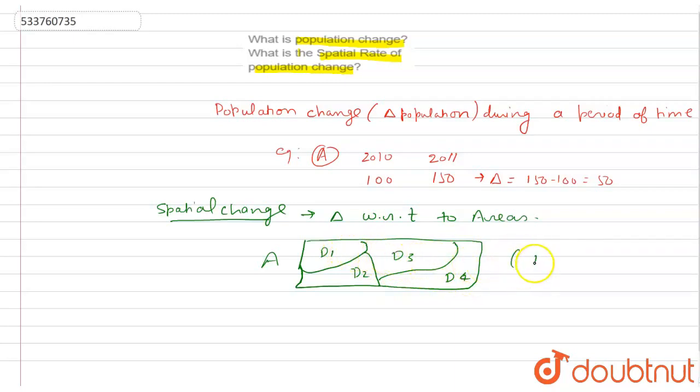During one year, the time period here is one year. Suppose in one year D1's population change was 10, D3's population change is 20, D2's is 40, D4's is 10. So what this means is, in any country, the population change that occurred in different regions or different areas, we call that spatial population change.